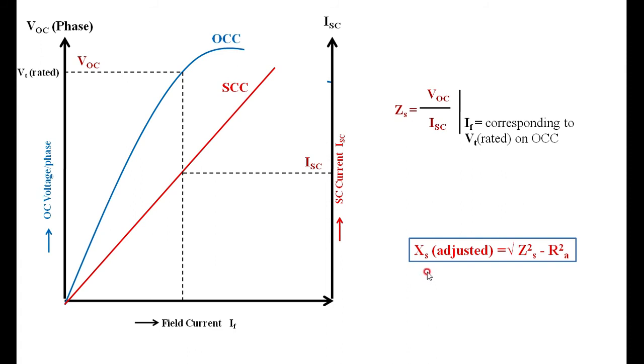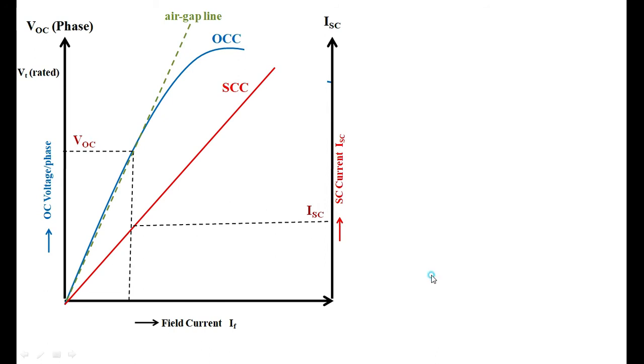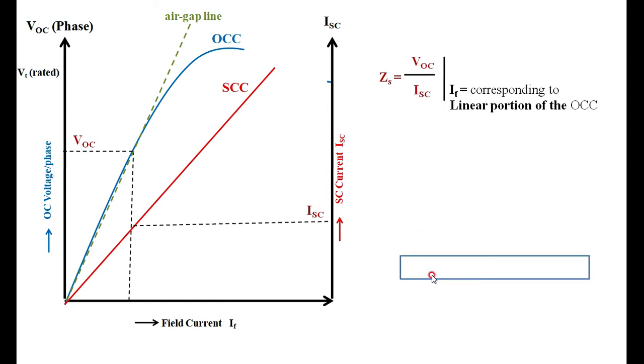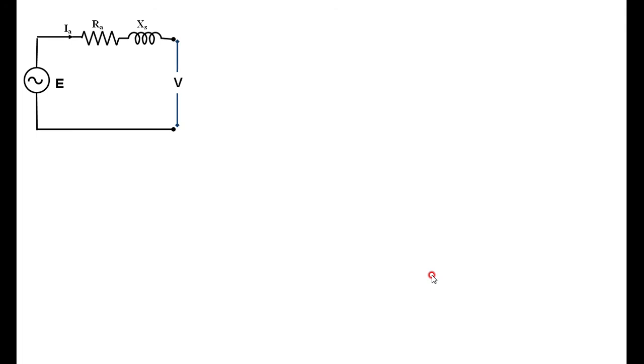Once we know the value of Xs, Ra, terminal voltage, load current, and power factor, we can find out the value of E. From the equivalent circuit, E = V∠0° + Ia∠±φ × (Ra + jXs). V is taken as reference at angle 0 degrees, and Ia leads or lags depending on power factor. E is the generated or internal voltage.